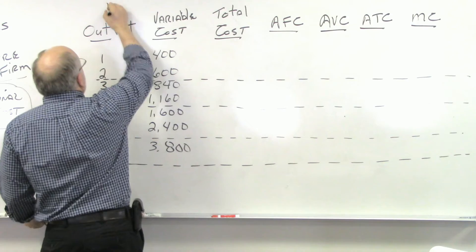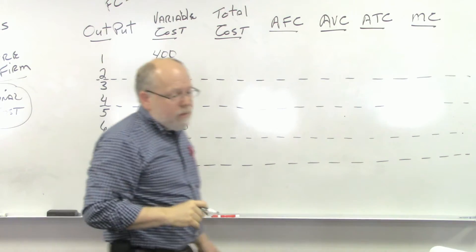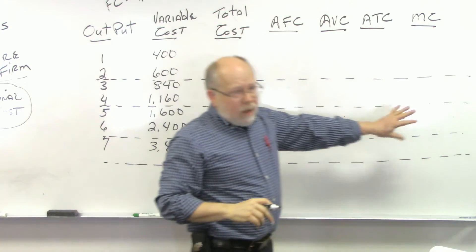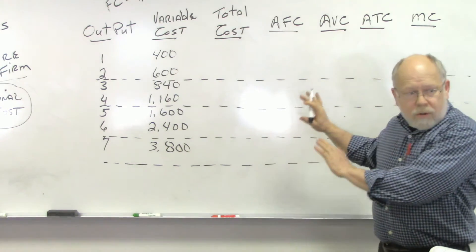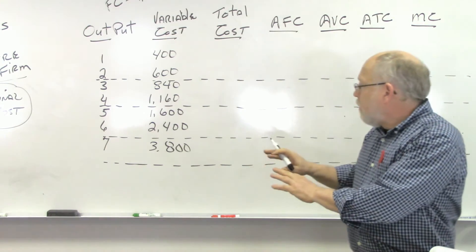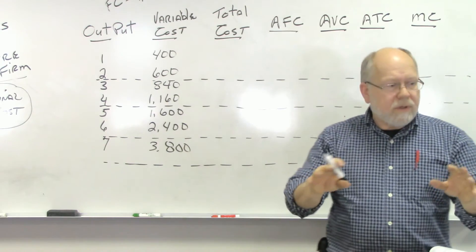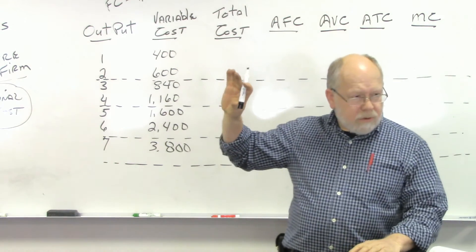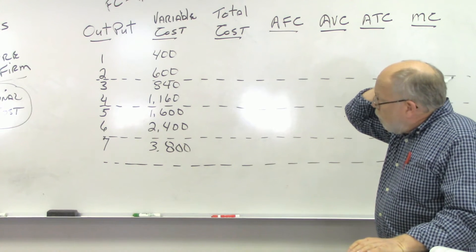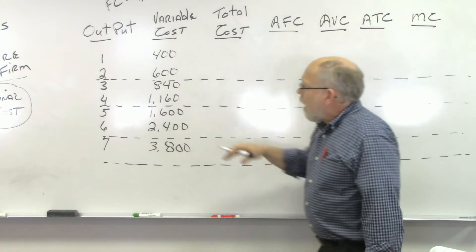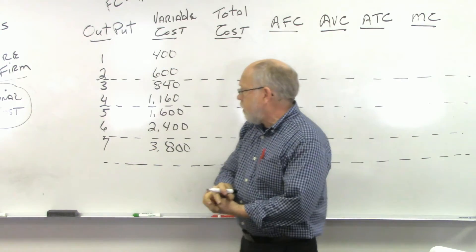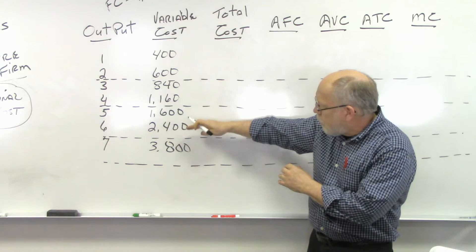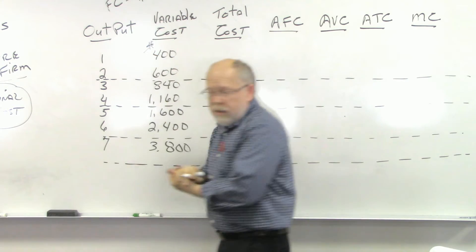Let's say that we have a fixed cost — a nice round number like $1,000. Now this is the sort of thing I'm going to ask you to do on a test, so if you can do this, you can do it on a test. It's not hard — like riding a bicycle, you just need to practice until it becomes second nature. So what we have here is a schedule of output from 1 to 7 units, and I've picked some variable costs. You can see the variable cost increases as we increase output. All these costs are in dollars.